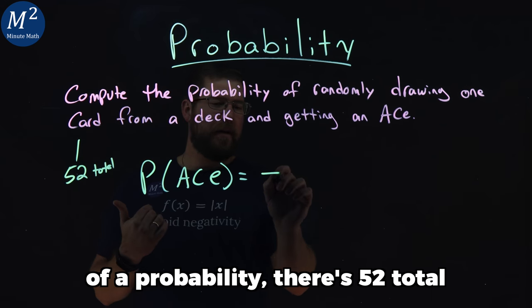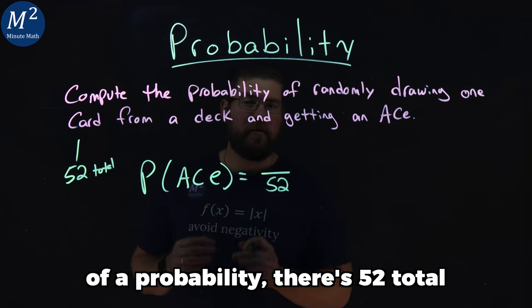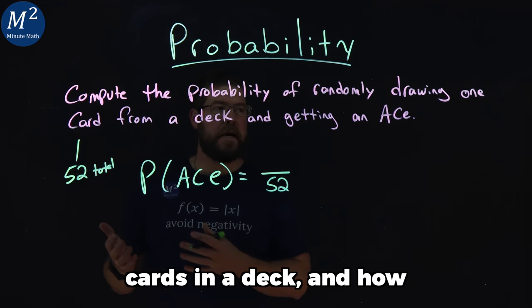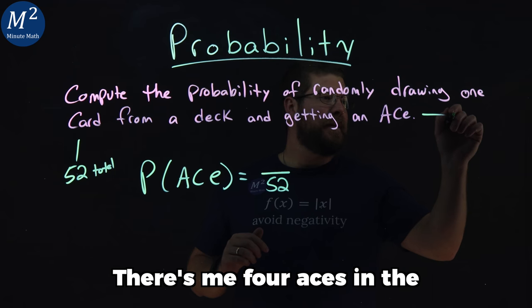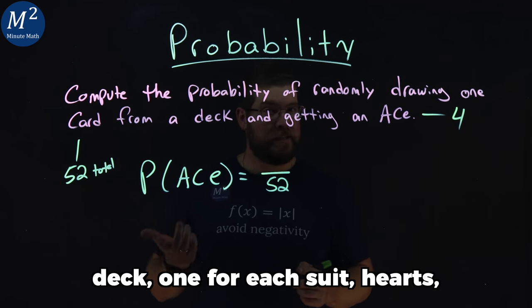So we put that in the denominator of the probability. There's 52 total cards in a deck, and how many of them are aces? There's going to be four aces in the deck, one for each suit.